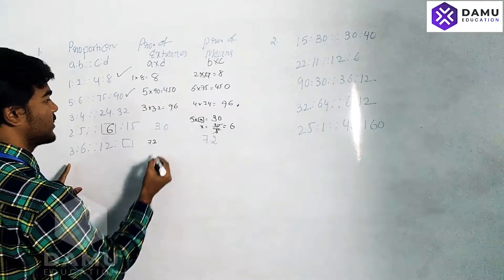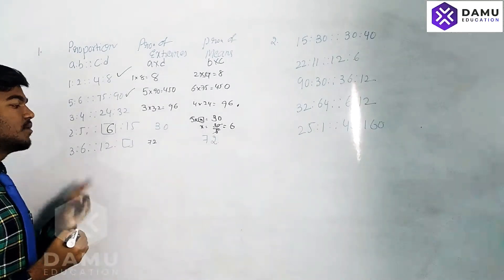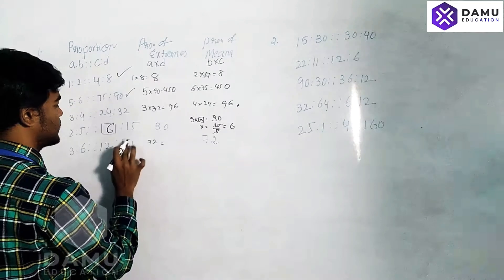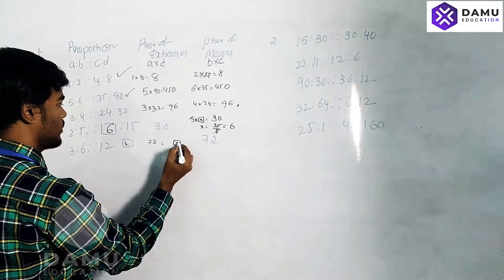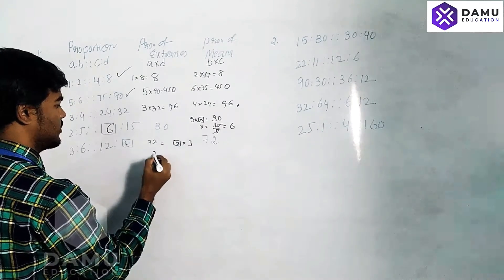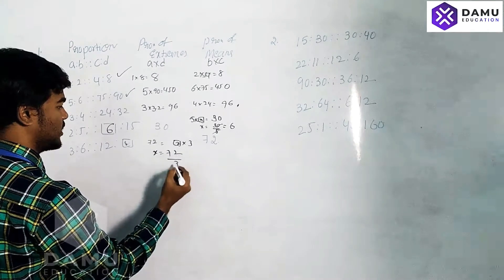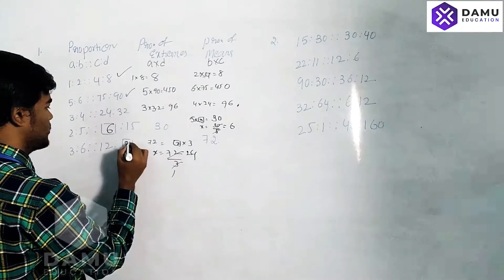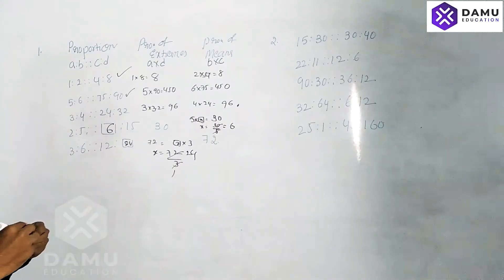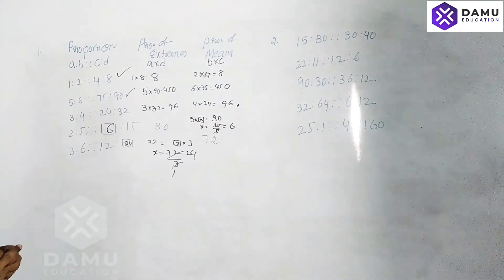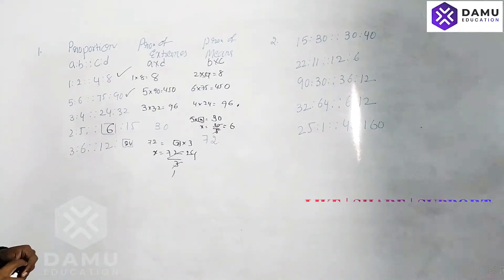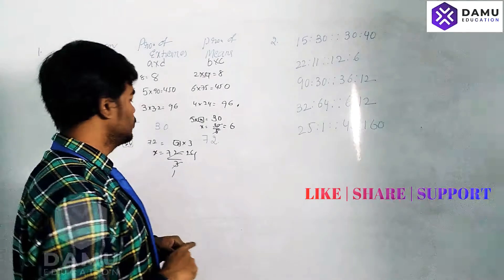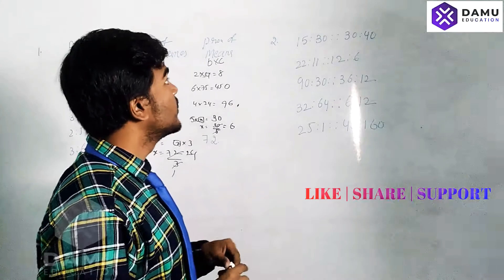Next, product of means equals product of extremes. Taking x × 3 = 72, so x = 72 ÷ 3 = 24. The missing value is 24.